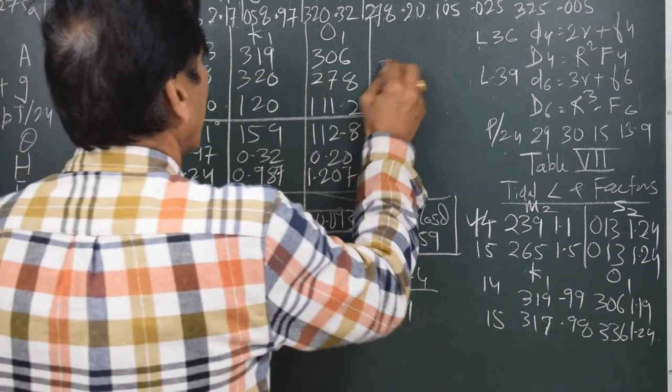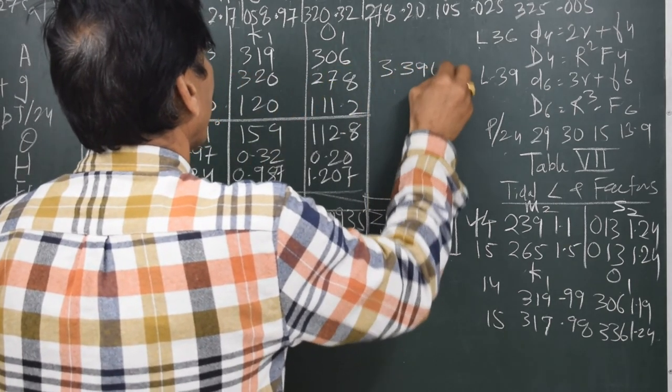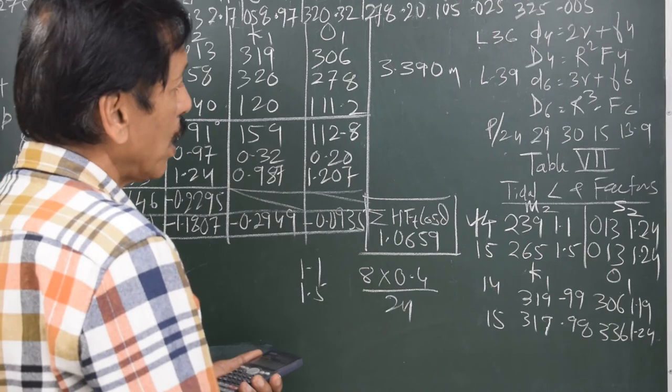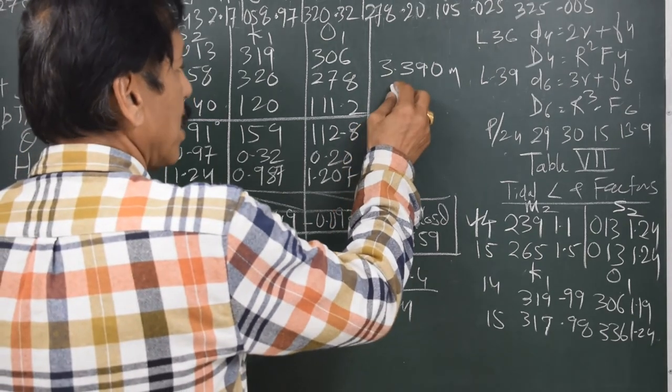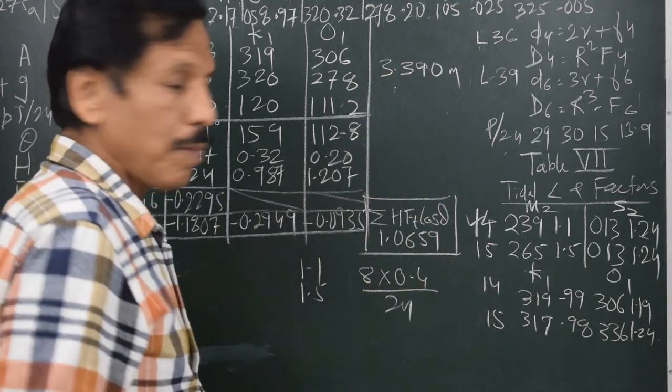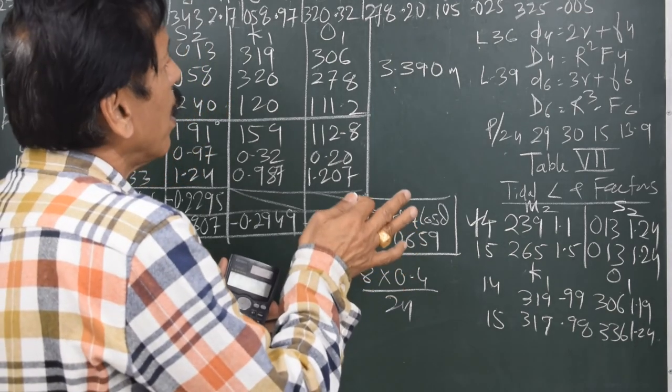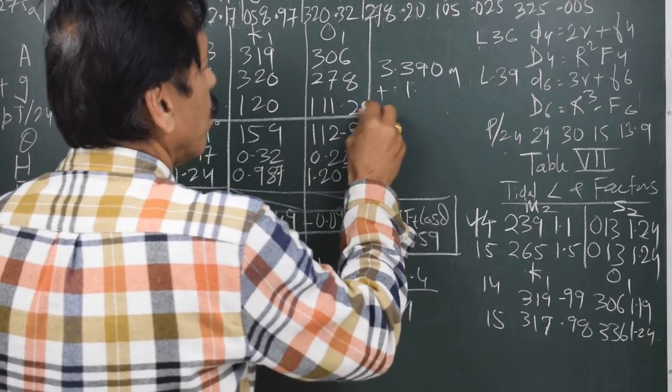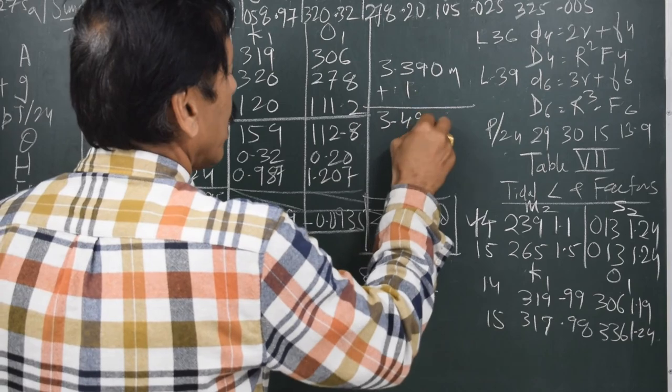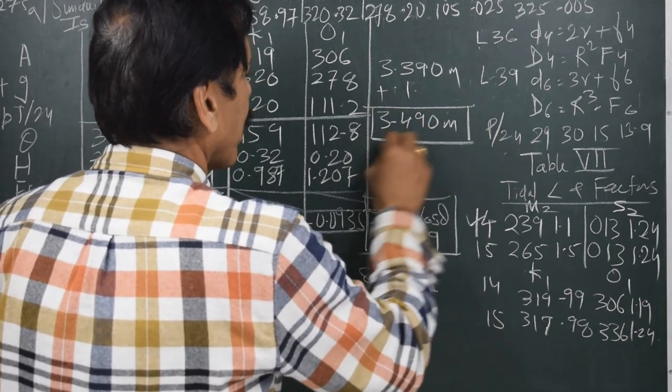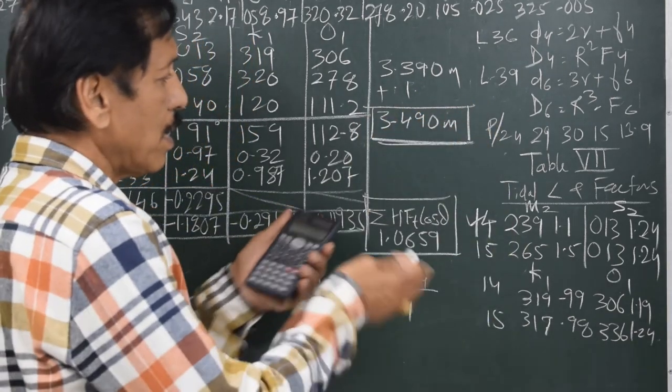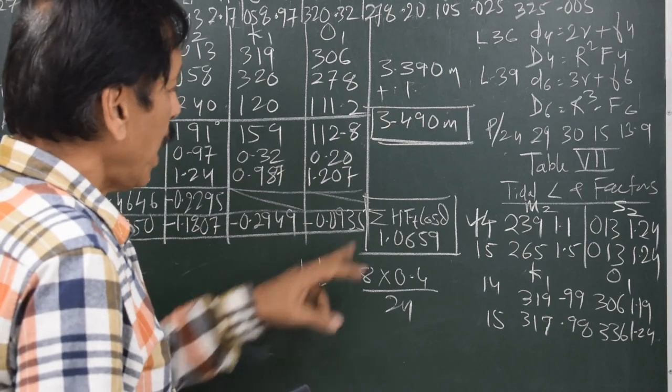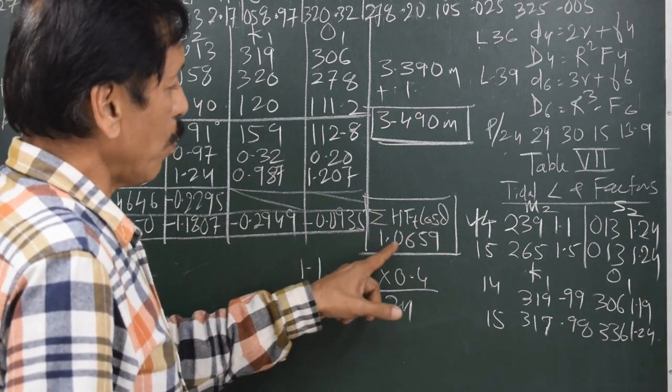Before that, I had this 3.39 as Z0, that is the mean level, 3.39 to which I add seasonal correction. For example, seasonal correction can be picked up from the bottom of the table. Let us say the seasonal correction was 0.1 additive. So it becomes 3.490 meters. So we have done 50% of calculation. That is, the mean tide level with the seasonal correction 3.49, and sigma H F_t cos theta is 1.0659.